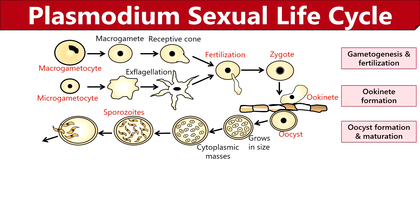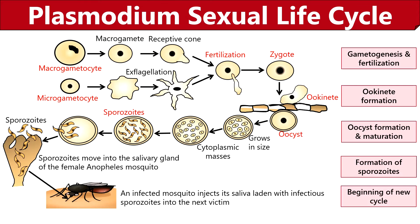The oocyst grows in size and undergoes multiple cellular divisions to form a large population of sporozoites. Eventually, the wall of the oocyst ruptures and the sporozoites find their way to enter the salivary gland of the female Anopheles mosquito. A new infection cycle begins when the infected female Anopheles mosquito injects the saliva laden with infectious sporozoites into a healthy person during a blood meal.